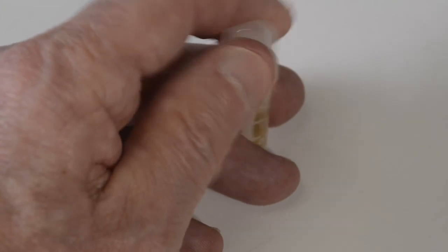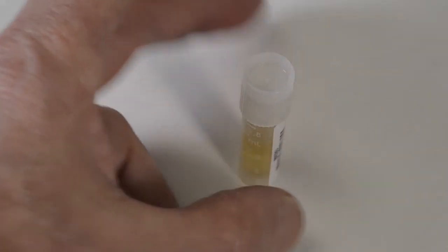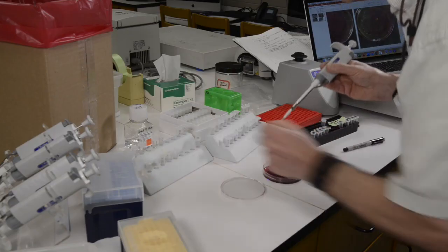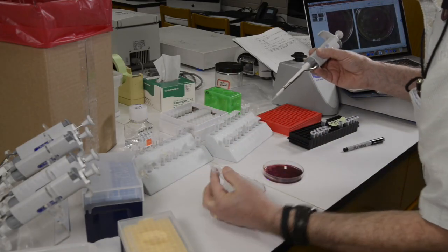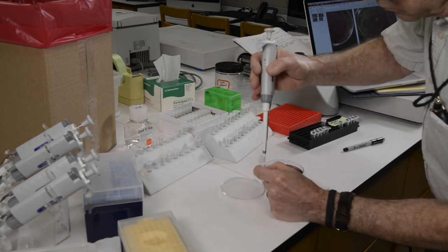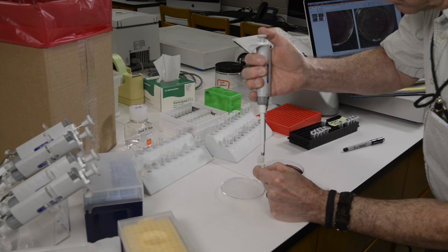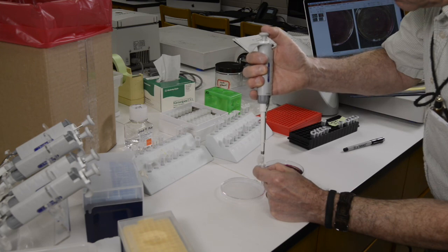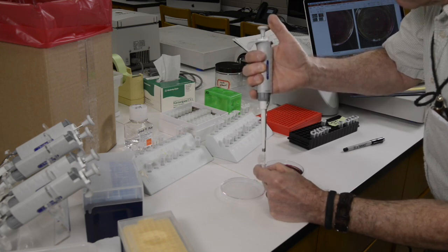The pipetter now can be used to make a bacterial suspension. Without setting down the pipetter, I'm going to go directly into a tube containing the 100 microliters of molecular grade water, and I'm going to pipette up and down to mix bacterial cells into that water, just as I'm doing here.